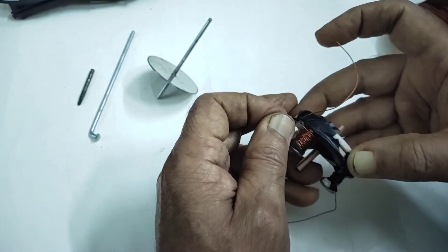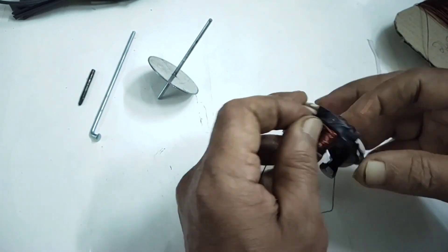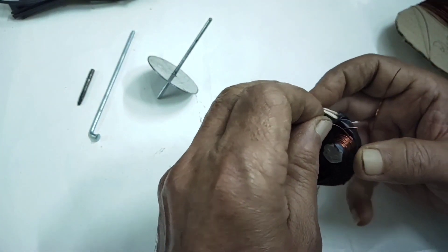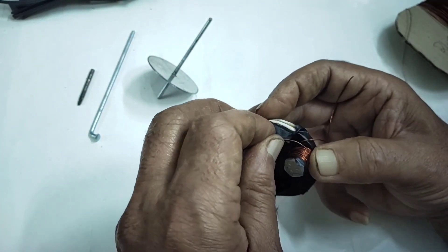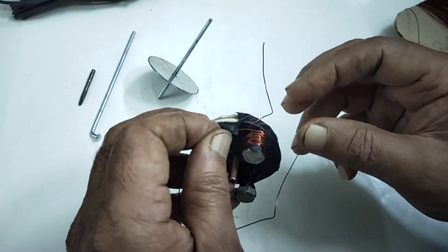So I have winded in anticlockwise 60 turns I have done using this 24.5 SWG.